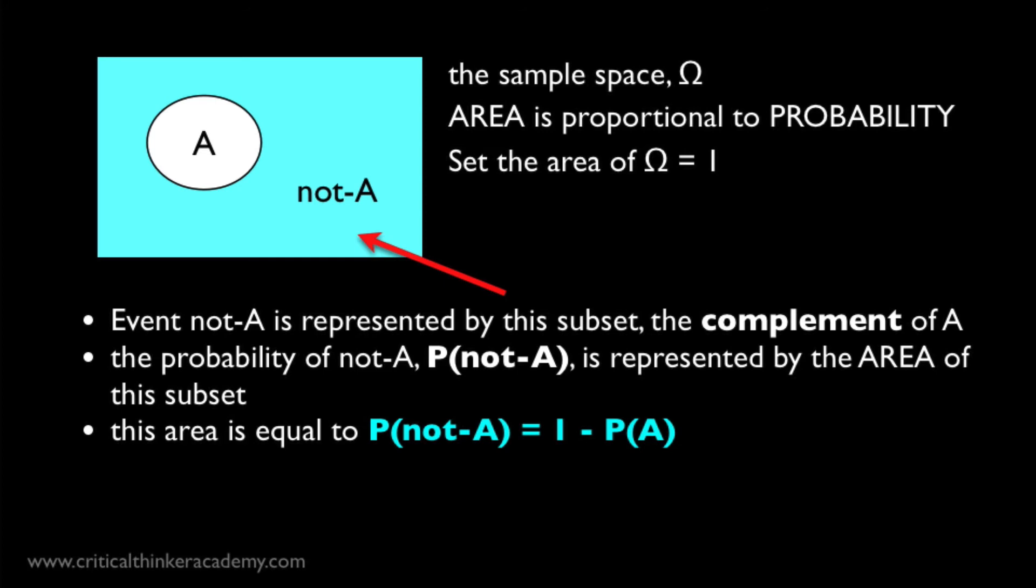So from this setup, we have a graphical version of the relationship we've been describing. A and NOT A partition the sample space into two parts with no overlap and no remainder. The area of 1 is 1 minus the area of the other.